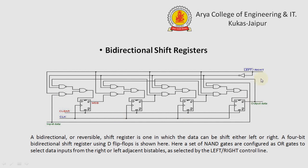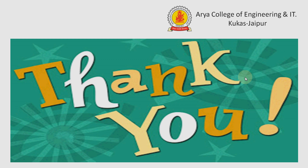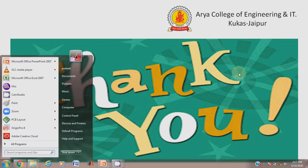The last type is the bi-directional shift register. It can shift the data from left to right and right to left. The block diagram shown uses 4 D flip-flops along with a set of NAND gates and OR gates to select data input for right-to-left and left-to-right shifting. There is also an adjacent control signal. Thank you.